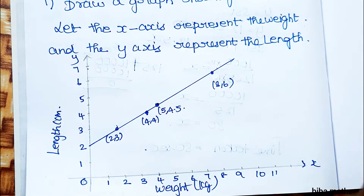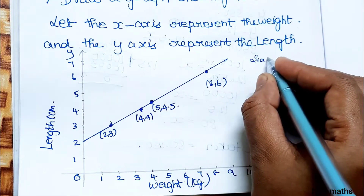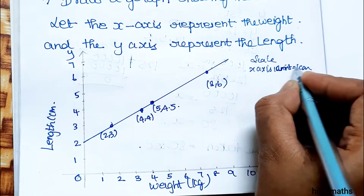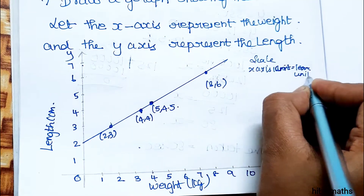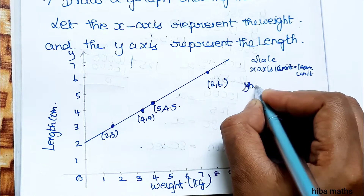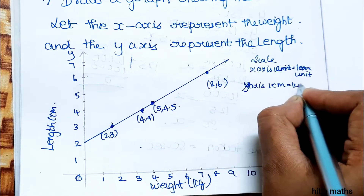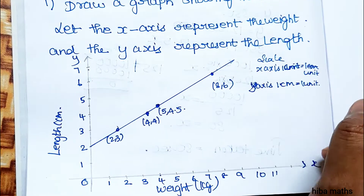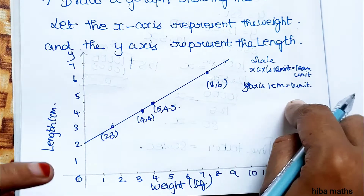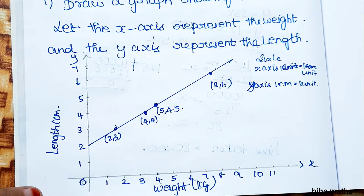We need a graph sheet. For the x-axis, one centimeter is equal to one unit. For the y-axis, one centimeter is equal to one unit. If you want to use the scale, you can use it as an option, but you can also use the sub-division.